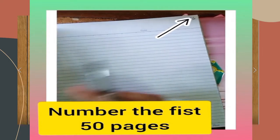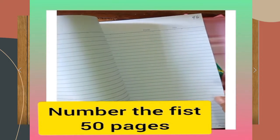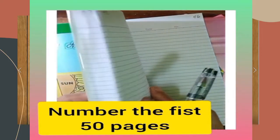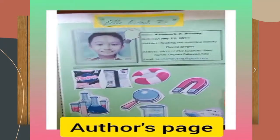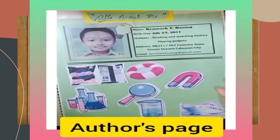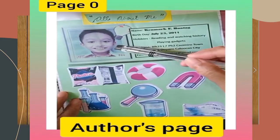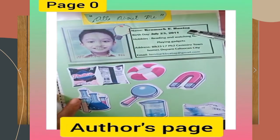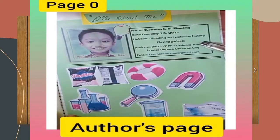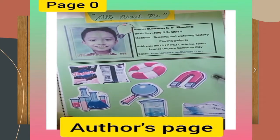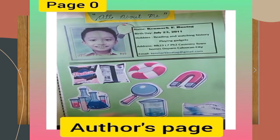Now that we have finished numbering the pages, let us now proceed to the author's page, or 'All About You' page. Here is an example. You can have your picture, your name, your birthday, hobbies, your address, contact number or email address, and you can also draw or glue anything that relates to yourself.